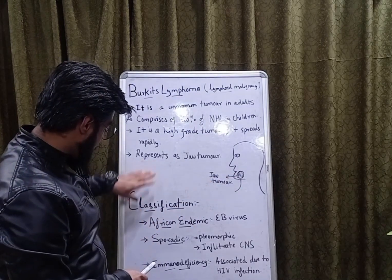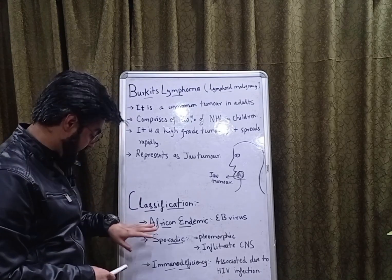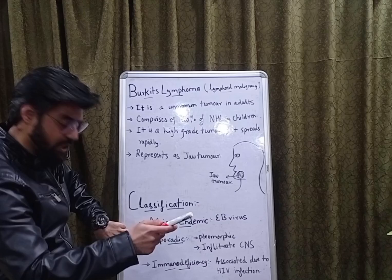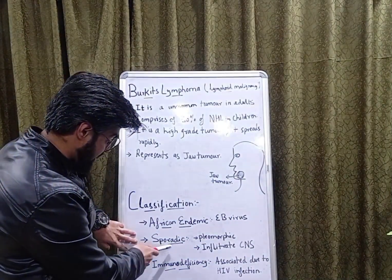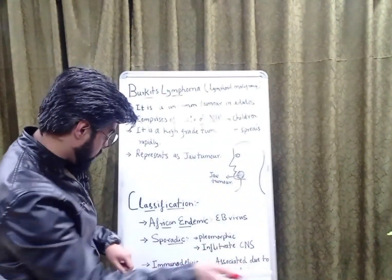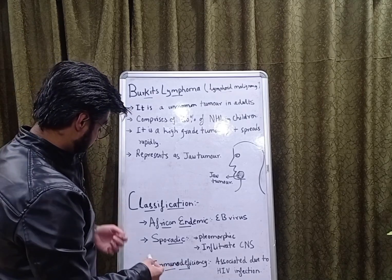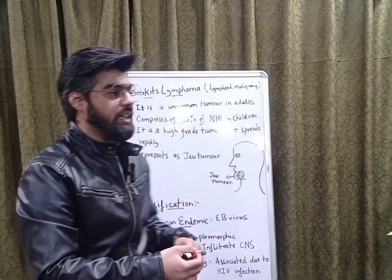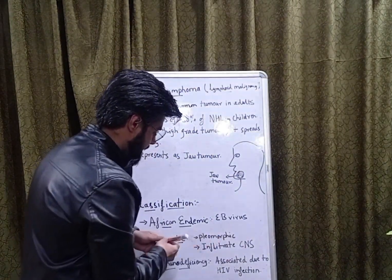There are three classifications or subdivisions: the first is African endemic, the second is sporadic, and the third is immunodeficiency. The African endemic type is usually associated with an oncogenic virus, for example Epstein-Barr virus.